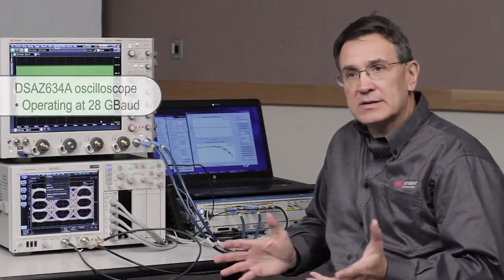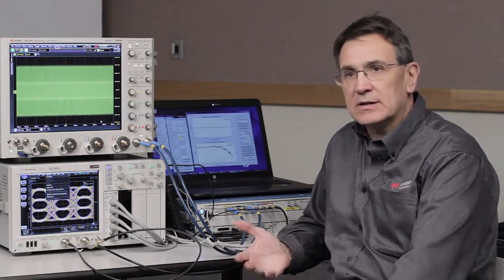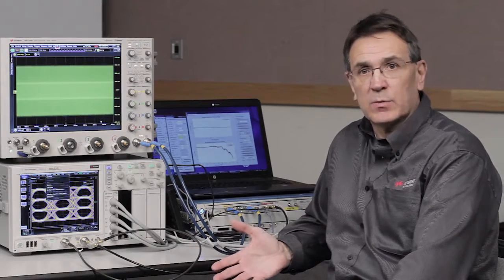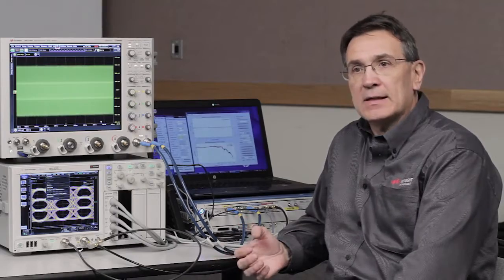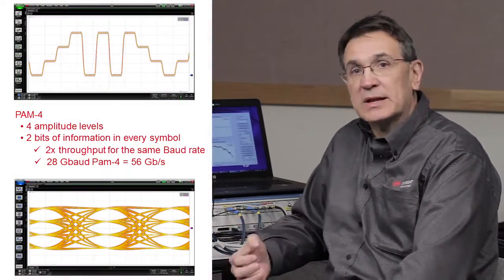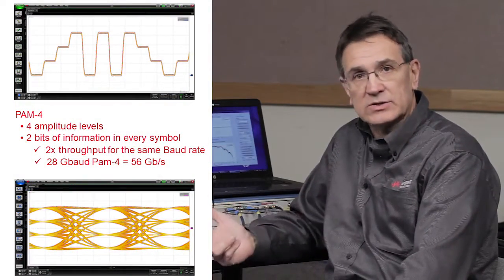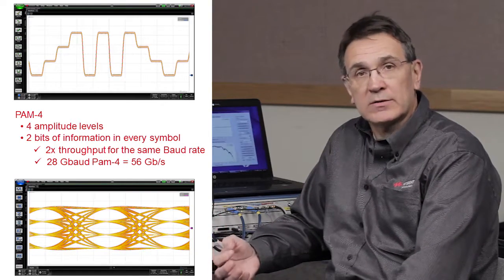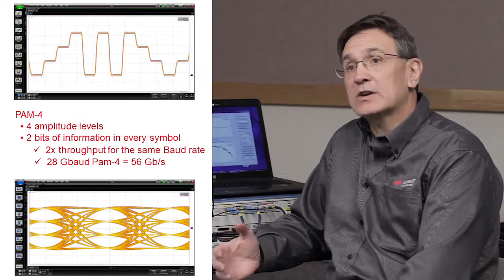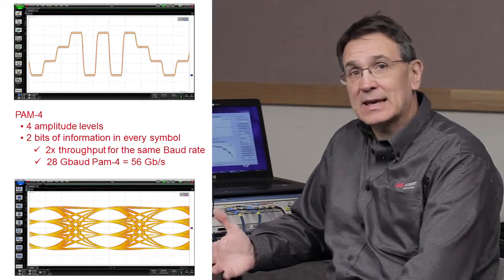Now PAM-4 is a little bit different than a classical NRZ-type signal where the symbol rate essentially equates to what the bit rate is. In the case of PAM-4, we're transmitting symbols and each symbol has two bits. So by transmitting 28 Gbaud or giga symbols per second, we're actually transmitting 56 Gb.